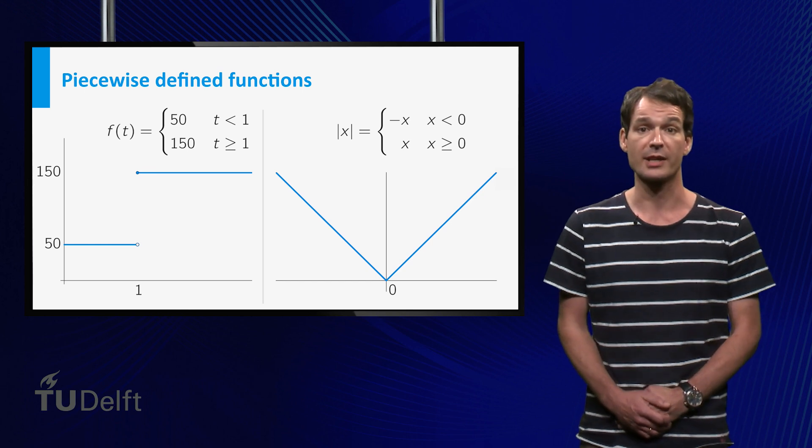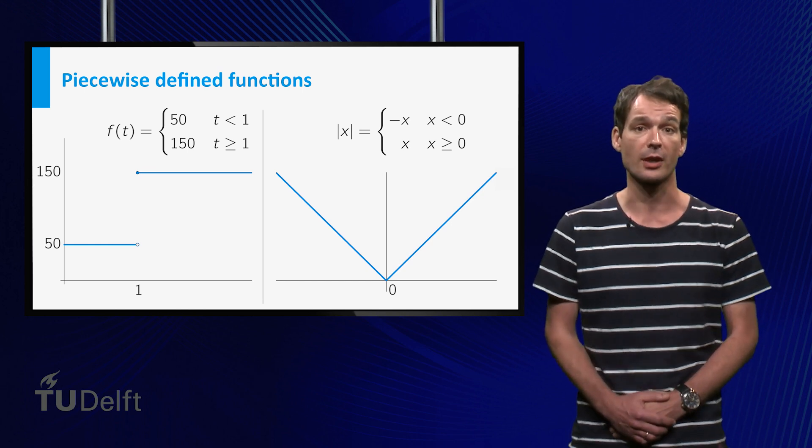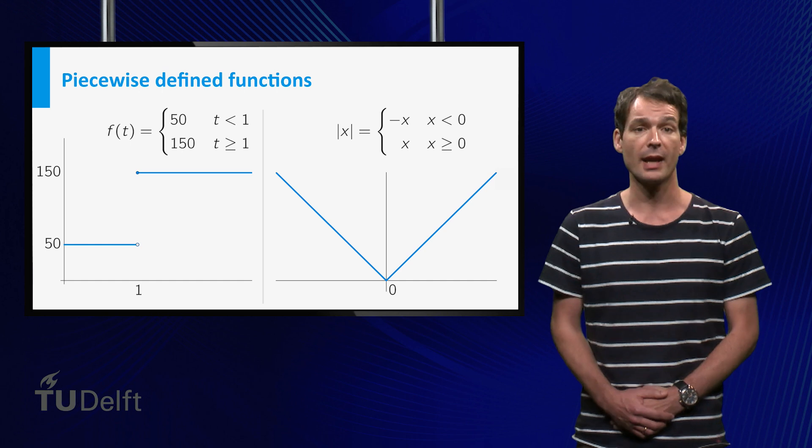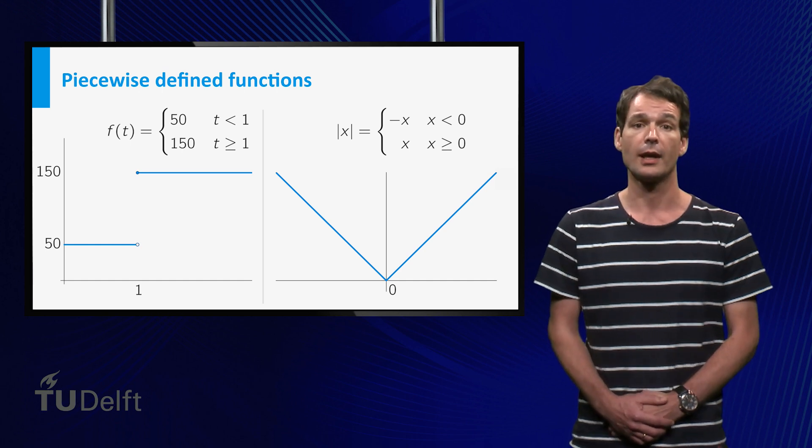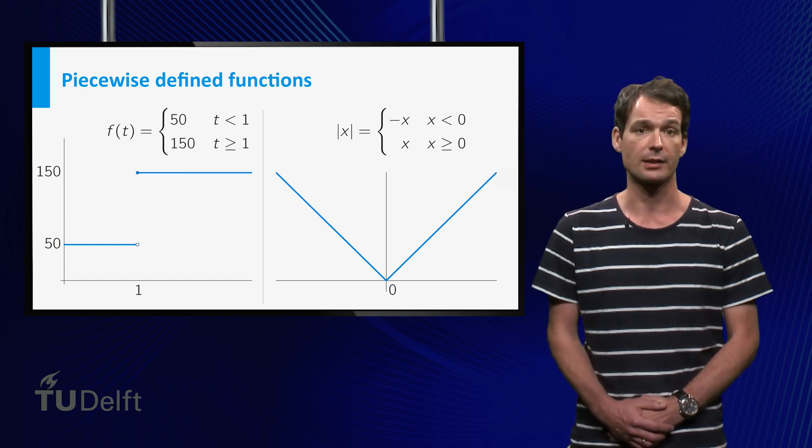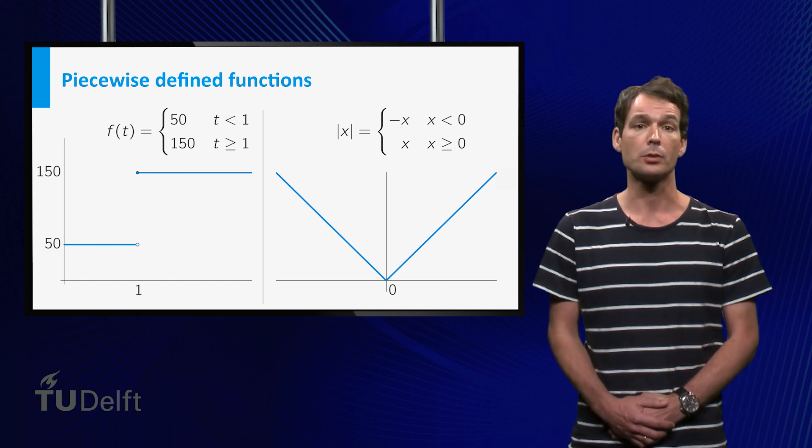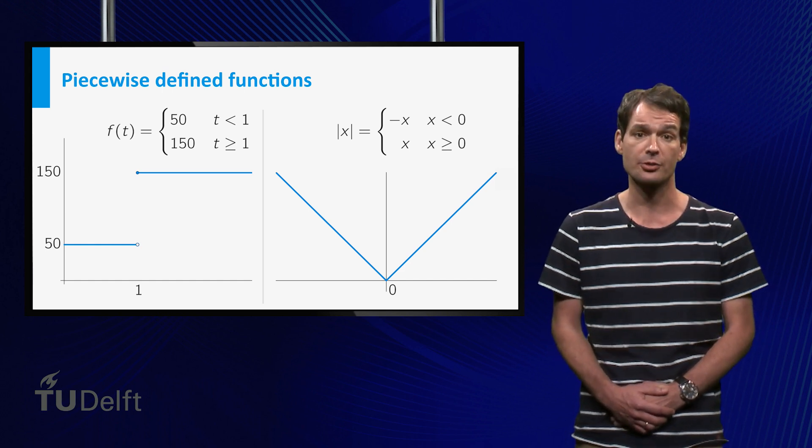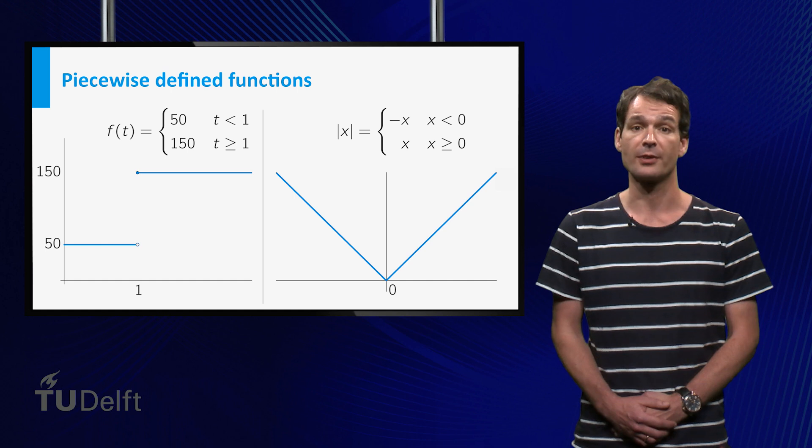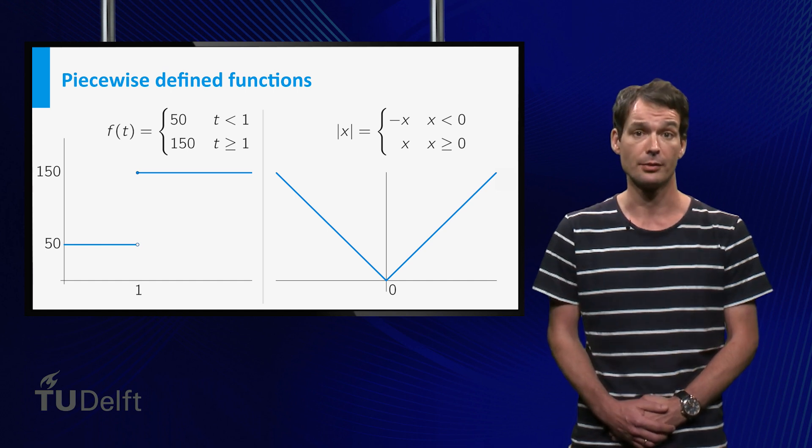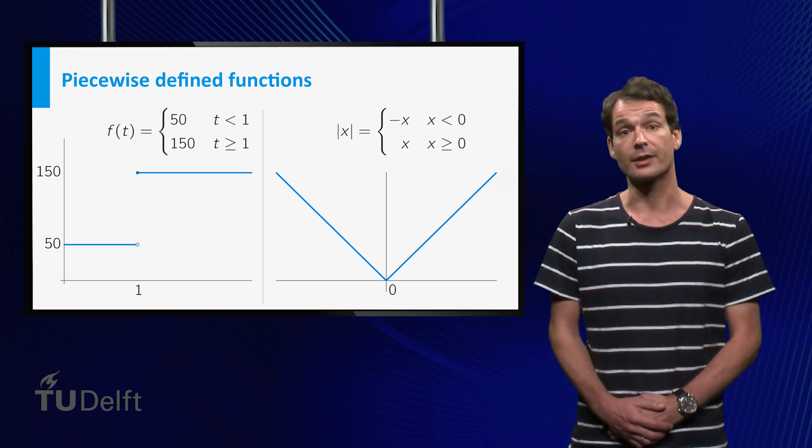Another example of a piecewise defined function is the absolute value function, which is defined to be minus x for negative x and the value is x for non-negative x. Note that the absolute value function is continuous, but piecewise defined functions are often discontinuous, as is the function on the left here.